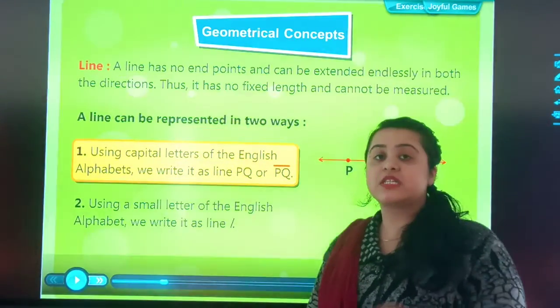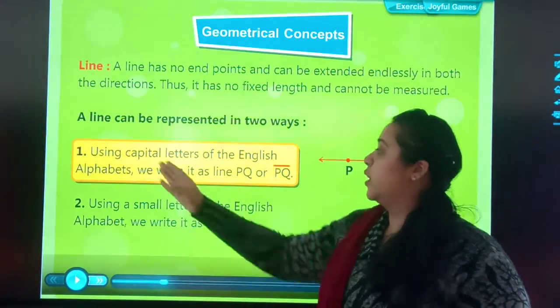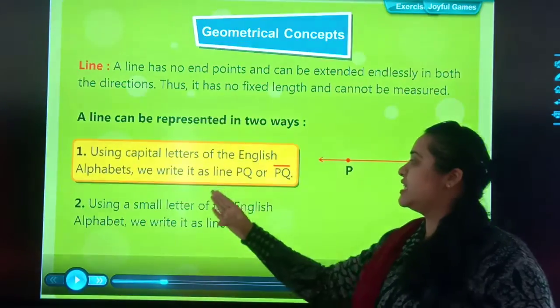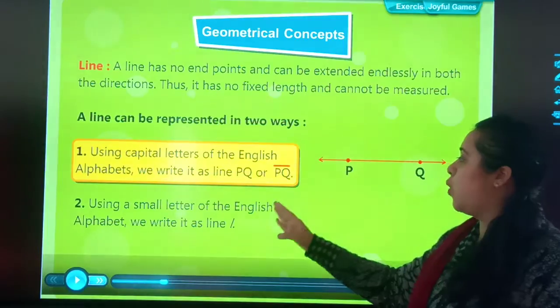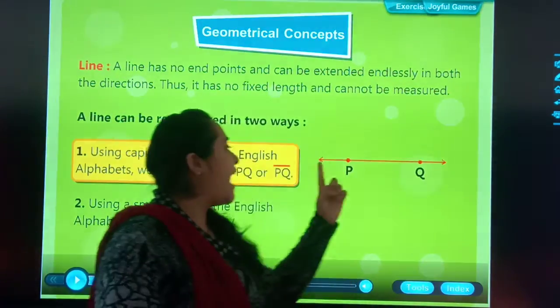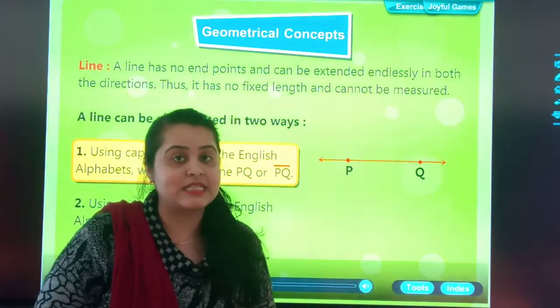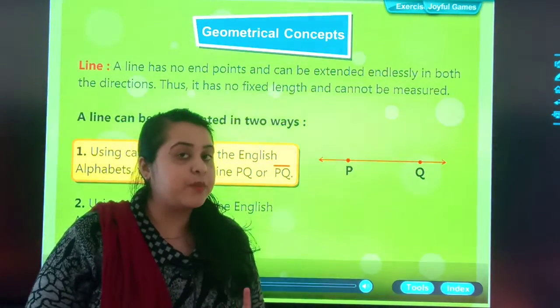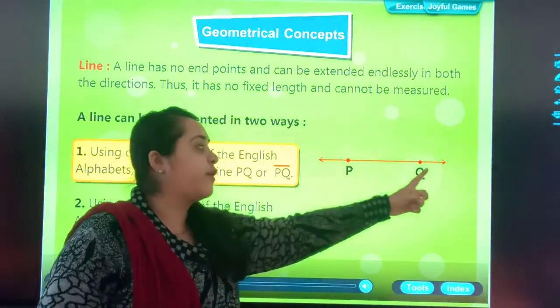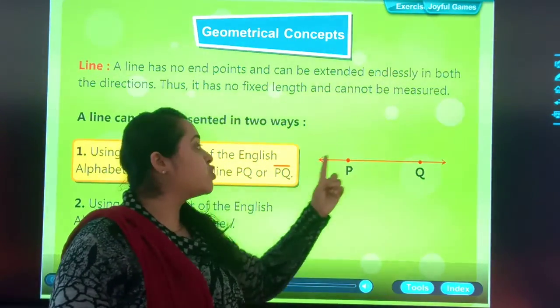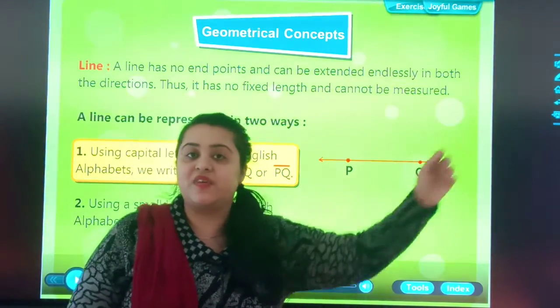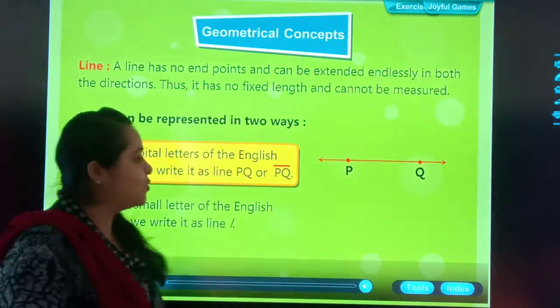Lines can be expressed in two ways. Using capital letter of the English alphabet, we write it as line P, Q or P, Q in this way. As you can see in this figure, there are arrows on both these sides. In line segment, we don't have arrows. But in line, we have arrows. These arrows show that the line can extend in this direction or the line can extend in this direction. Okay students.